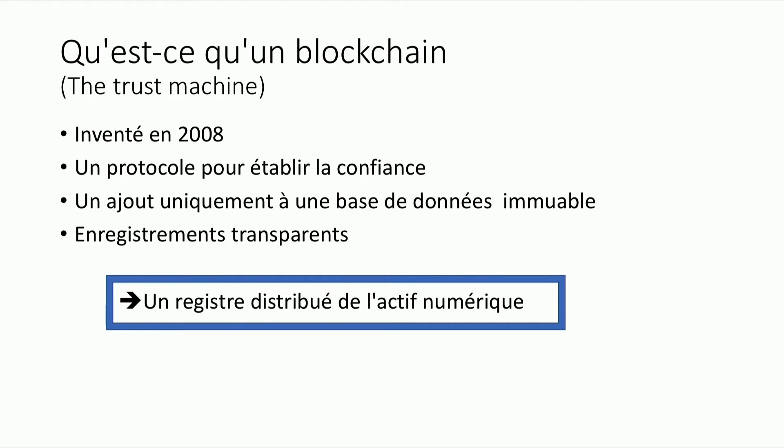I would like you to imagine that we are all here holding a notebook and we are keeping track of every transaction that is happening in the room — and not only keeping track, we are also verifying each other's work. So if I altered something, changed some fact that happened, everyone here will see that I changed it and I will not be trusted anymore. This is how blockchain works if we don't have computers on the internet.